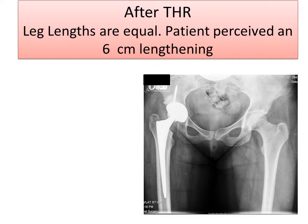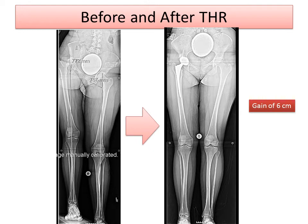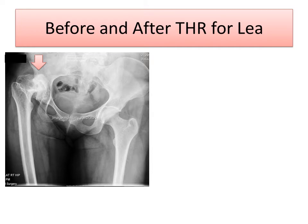After total hip replacement, her leg lengths were equal, and the patient perceived a 6 centimeter lengthening. You'll notice on the long x-ray the pelvis is level, and a full 6 centimeters of lengthening has been achieved. There was a gain of 6 centimeters. The sciatic nerve has not been stretched 6 centimeters because it's not a true lengthening and stretching of the nerve, rather an unlocking of the pelvis that allows for the apparent lengthening of the leg. No additional lengthening surgery was necessary other than the hip replacement.